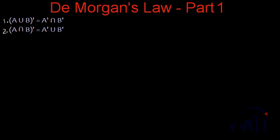In this video we are going to discuss about the written proof of De Morgan's Law, and this is part one. We have already learned how to prove these laws or identities using Venn diagrams, and now we are going to discuss about the written proof of these identities.